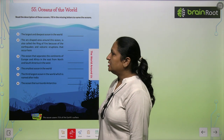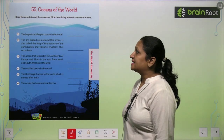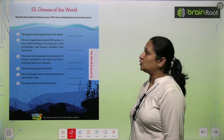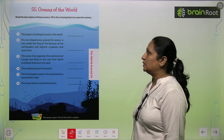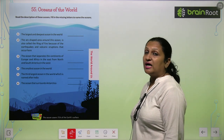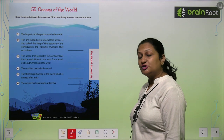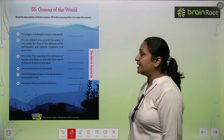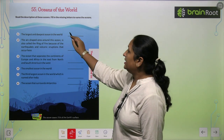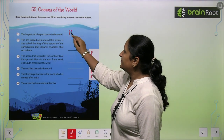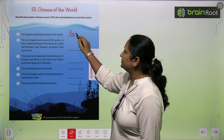See the first one: the largest and the deepest ocean in the world. So, the largest and deepest ocean is the Pacific Ocean.